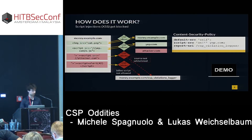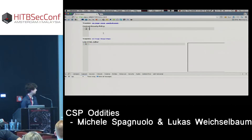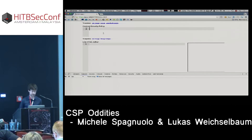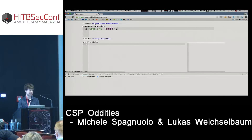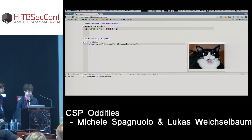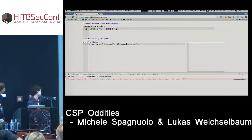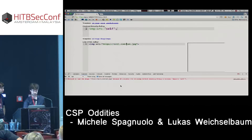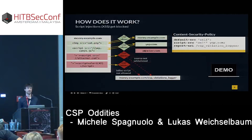Here's a quick demo. We can specify the content security policy — for example, allowing just images on the same domain. If I add a cat image on the same domain, it loads. But if I try to source something from evil.com, it says 'Refused to load the image evil.com/cat.jpg because it violates the following Content Security Policy.'